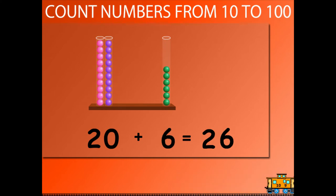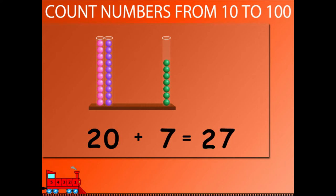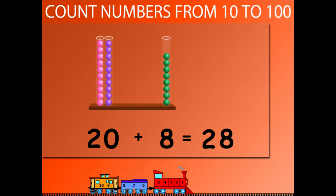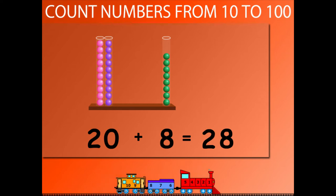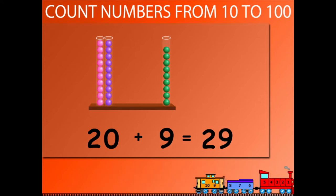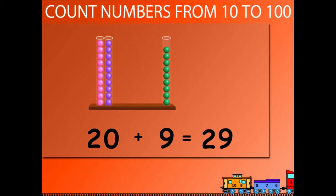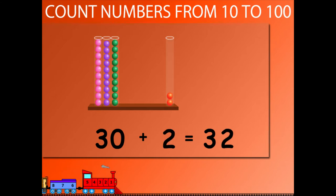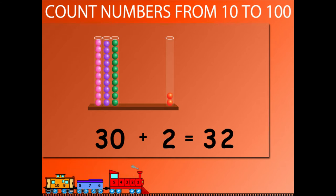20 plus 6 is equal to 26. 20 plus 7 is equal to 27. 20 plus 8 is equal to 28. 20 plus 9 is equal to 29. 20 plus 10 is equal to 30. 30 plus 1 is equal to 31. 30 plus 2 is equal to 32.